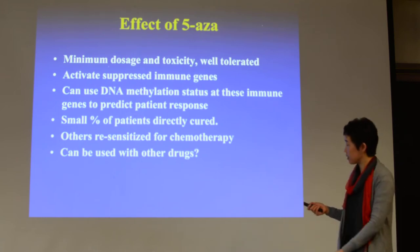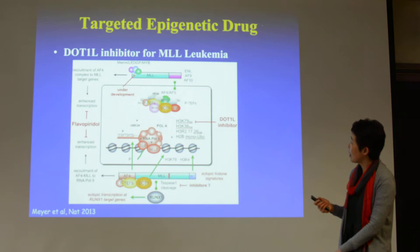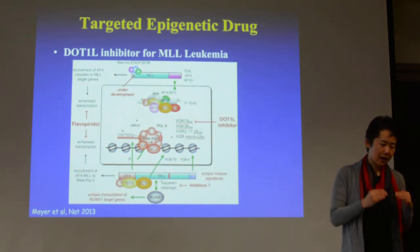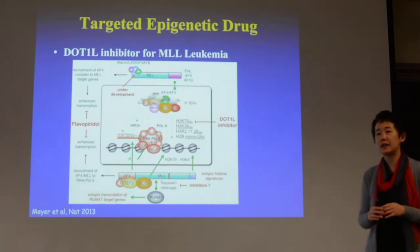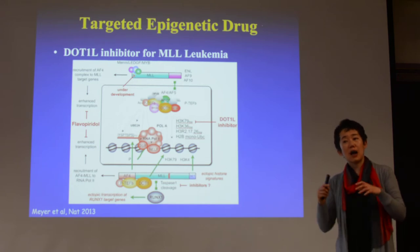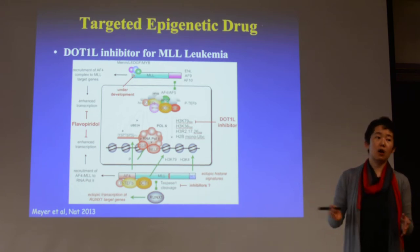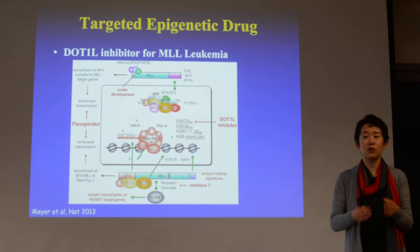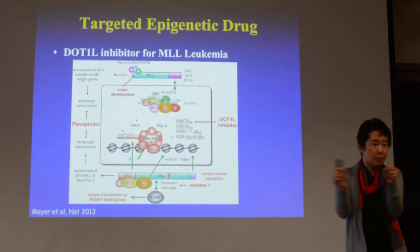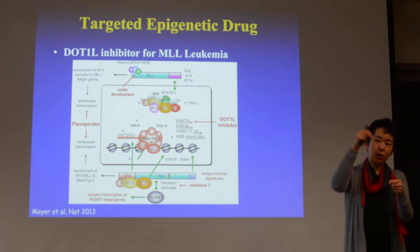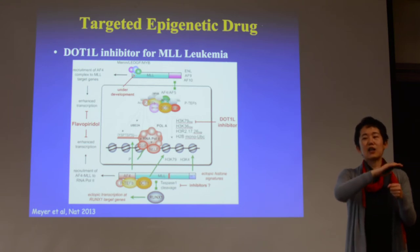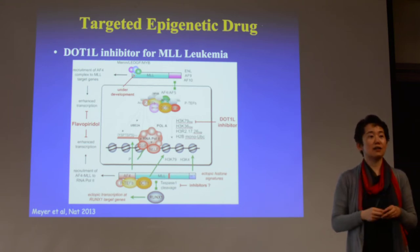When you treat cells with 5-Azacytidine, it not only activates immune-related genes in the cancer cell, but also the hypomethylated silent regions get activated. These cancer cells now have a kind of microsatellite instability — all their repeat sequences get expressed on the cell surface. That induces a stronger immune response, and adding immunotherapy is pretty effective. Right now there are efforts combining these two drugs.